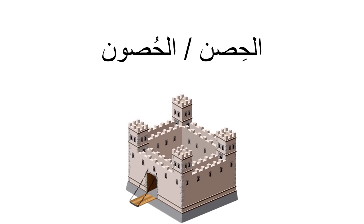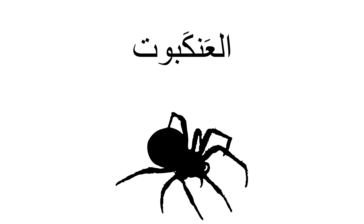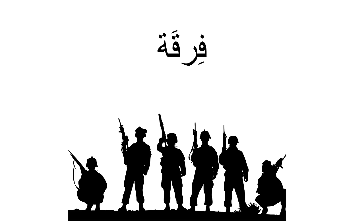'Al-hissn' refers to a strong structure typically built for defensive purposes. The plural is 'al-husson,' meaning 'the castles.' Next, 'al-ankaboot' means 'the spider.' Finally, 'firqa' means a band or a group — 'firqa askariya' means 'military group.'